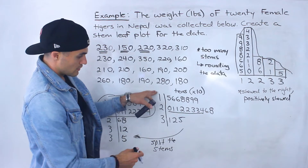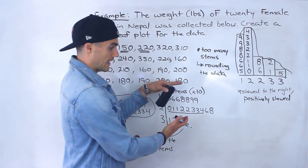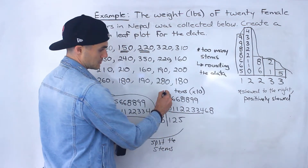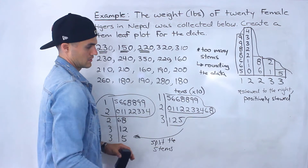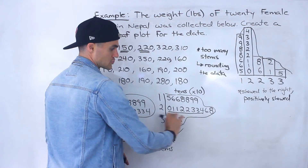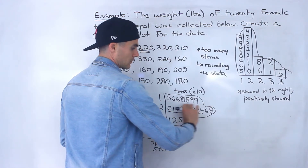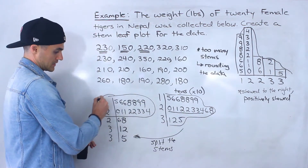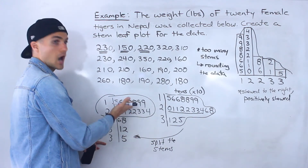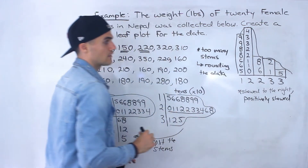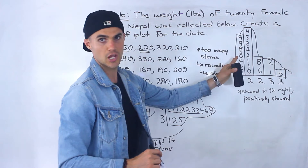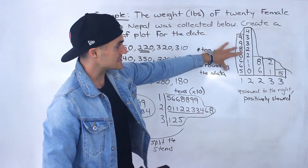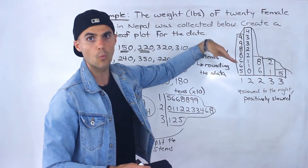Notice that if we took the unsplit stem-leaf plot and made a histogram, we wouldn't necessarily be able to tell that most of the data is on the left, because it would look more symmetrical — the big middle part would sort of dominate. But after we split the stems, we can clearly see that most of the data is pushed up on this stem-leaf plot, or to the left on the histogram.